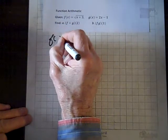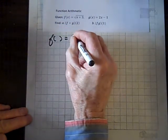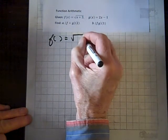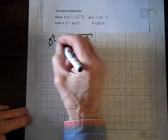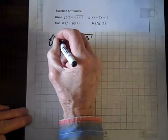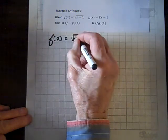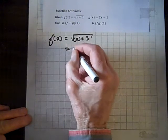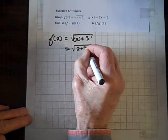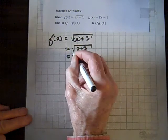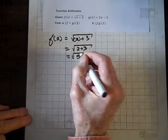f of whatever equals - we replace the x with parentheses. Whatever we put in here, we put in there. So if I put a 2 there, I have to put a 2 there. That's going to be square root of 2 plus 3, which equals the square root of 5.